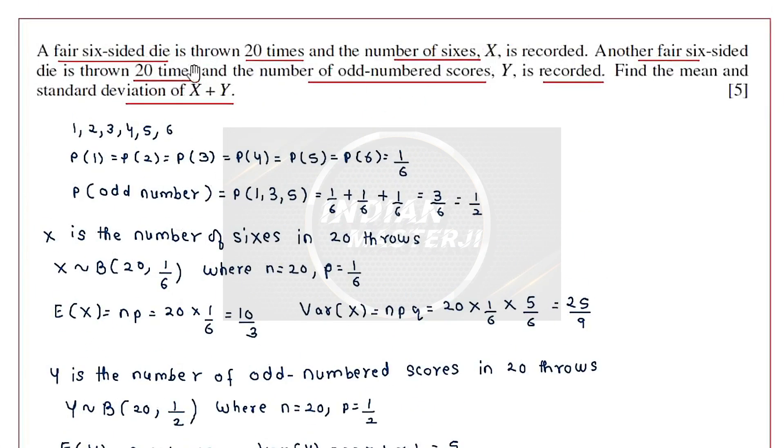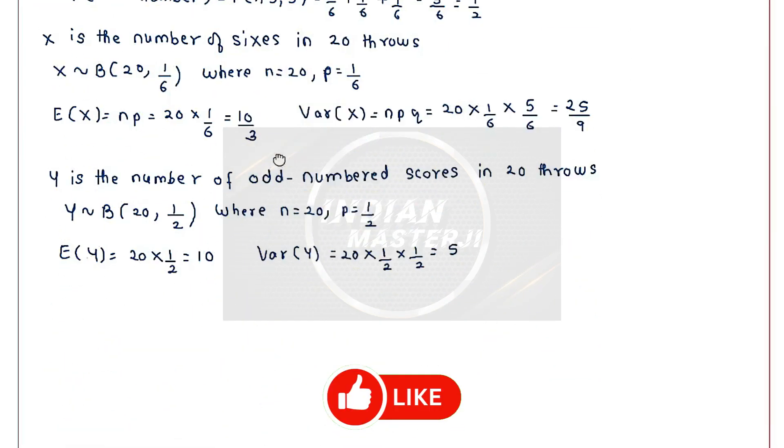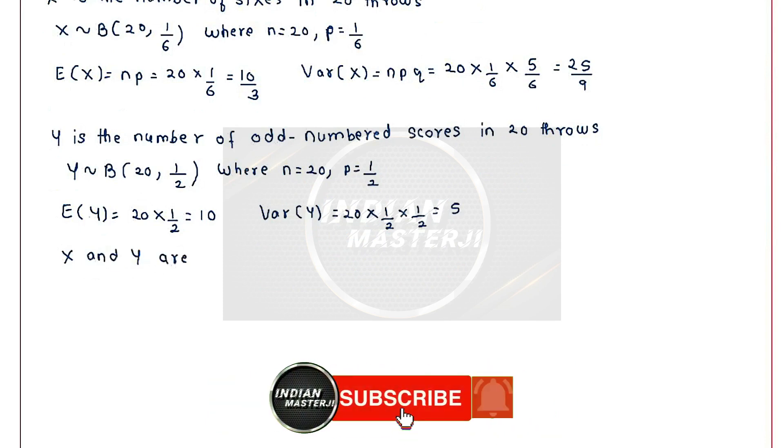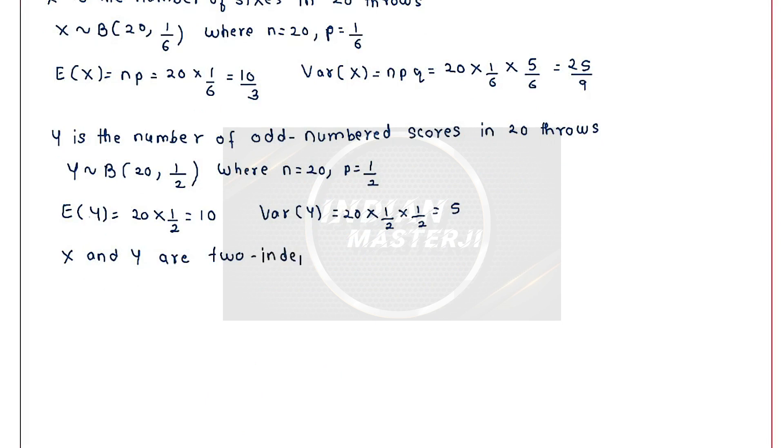Now X was recorded for one fair-sided die and Y was recorded for another fair-sided die. So that means X and Y are independent variables - two independent random variables.